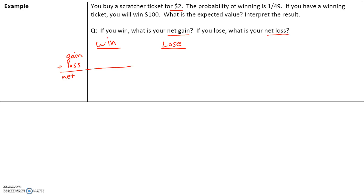Let's take the first scenario. You buy the lottery ticket for $2. As soon as you buy it, you've lost $2 regardless of whether you win or lose. If you win, you win $100. So your net winnings are only $98, because you spent $2 to buy that ticket.